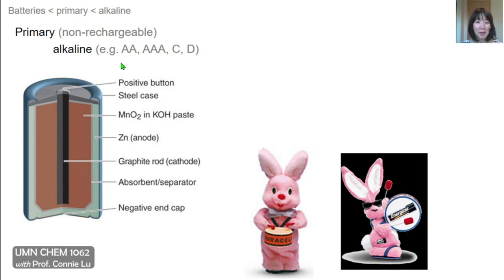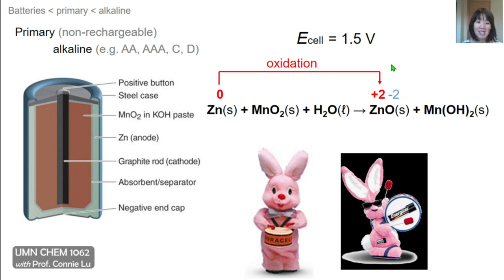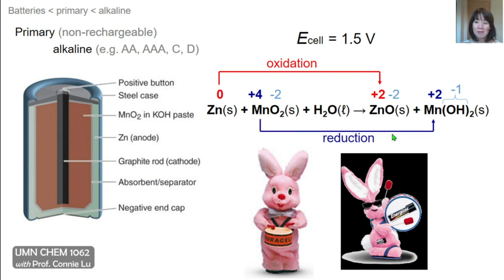One of the most popular batteries is the alkaline battery, and if you've ever used AA or AAA, this is what that battery would look like inside. These are examples of primary batteries that are non-rechargeable. The reason why they're called alkaline is because of the presence of potassium hydroxide paste, which is used as an electrolyte. The redox reaction that happens inside this battery is between zinc and manganese dioxide to generate zinc oxide and manganese hydroxide. Zinc is being oxidized from 0 to +2, so that would be our oxidation half reaction at the anode. Manganese, on the other hand, is being reduced from +4 to +2, and that is our reduction half reaction. The overall cell potential for this reaction is 1.5 volts.